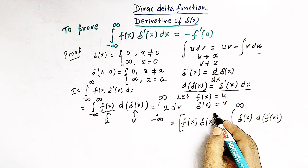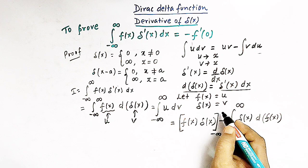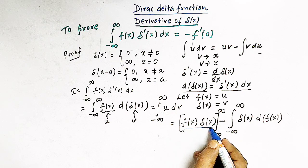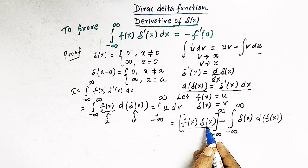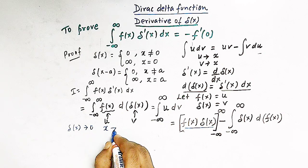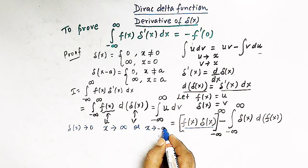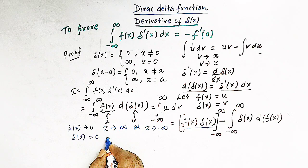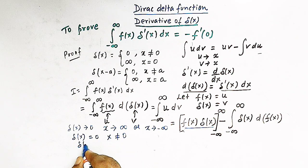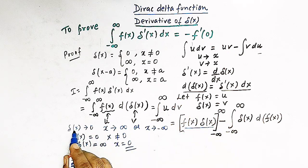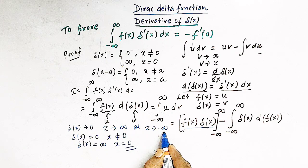Note that we take the limits from minus infinity to infinity. Considering the first term: the product f(x) times delta(x) — delta(x) tends to 0 when x tends to infinity or x tends to minus infinity, because the delta function is 0 for all x not equal to 0. So this boundary term reduces to 0.